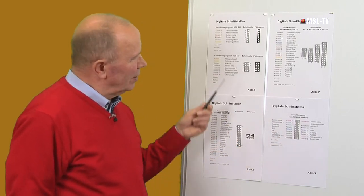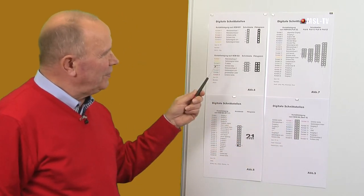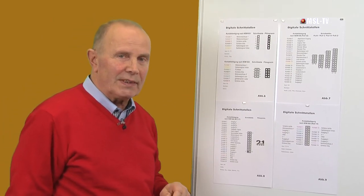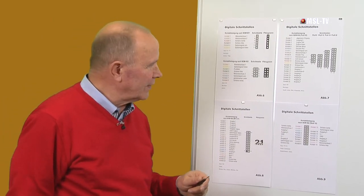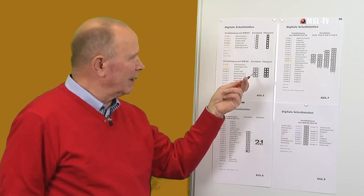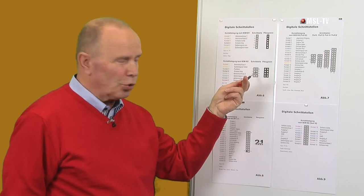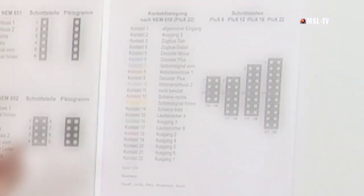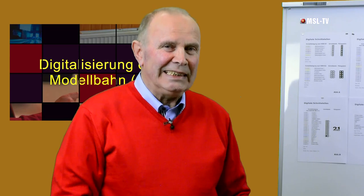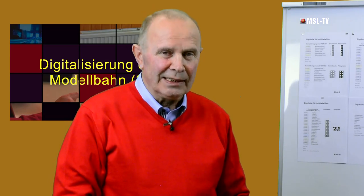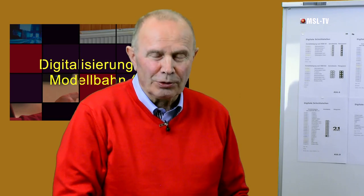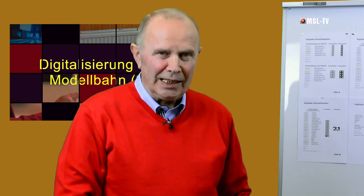Nochmal zusammengefasst: die Vielzahl der Schnittstellen, die im Laufe der letzten 20 Jahre erschienen sind. Begonnen hat alles mit der 8-poligen Schnittstelle, damals eingeführt von der Firma Roco. Was tun wir nun mit Lokomotiven, die älter als 20 Jahre sind? Denn jene können ja keine Schnittstellen haben, weil es sie damals noch nicht gab.